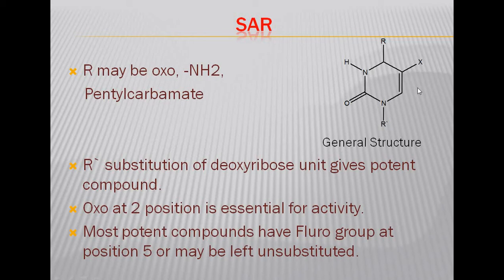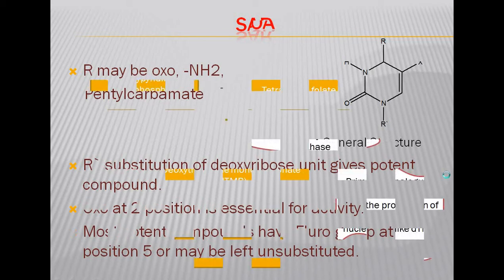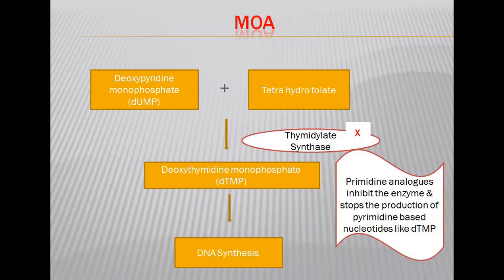The oxo group at position 2 is essential for activity, and the most potent compounds have a fluoro group at position 5 or may be left unsubstituted. In normal conditions, the enzyme thymidylate synthase is required for the synthesis of deoxythymidine monophosphate from deoxypyrimidine monophosphate and tetrahydrofolate. All pyrimidine analogues inhibit thymidylate synthase, stopping the production of deoxythymidine monophosphate, which is required for DNA synthesis — thus blocking DNA synthesis.